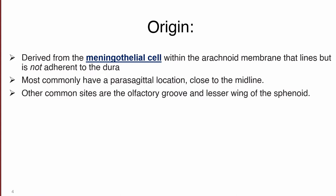Regarding the origin of meningiomas, they are derived from meningothelial cells within the arachnoid membrane. They are most commonly present around the parasagittal location, close to the midline. Other sites where meningiomas can be found include the olfactory groove as well as the lesser wings of the sphenoid bone.